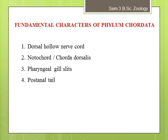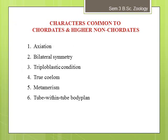The fourth fundamental character is the post-anal tail — a posterior elongation of the body extending beyond the anus. The tail contains skeletal structures and muscles. In aquatic species like fishes, it provides a structure that helps in locomotion. In some terrestrial vertebrates, the tail also helps in balancing and courtship rituals. In humans and apes, the tail is reduced to a vestigial coccyx, or what we call a tailbone.